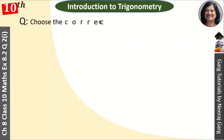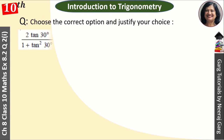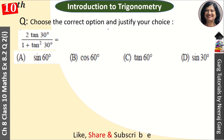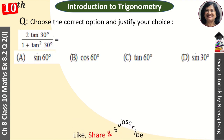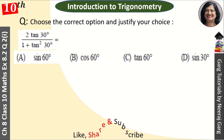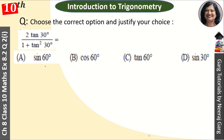Hi, this is Neeraj Garg and you are watching Class 10th Chapter 8 Trigonometry — 'Choose the correct option and justify your choice' MCQ. Pehla question hai: 2 tan 30° upon 1 plus tan² 30°. Options diye hue hain: sin 60°, cos 60°, tan 60°, ya sin 30°.